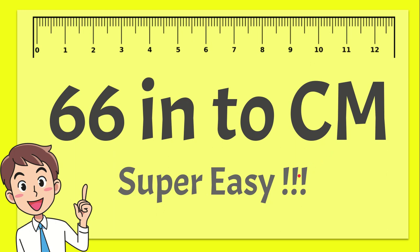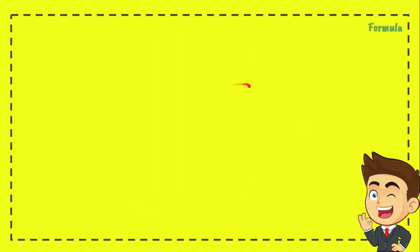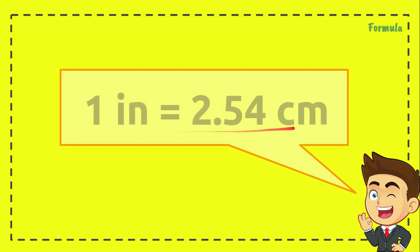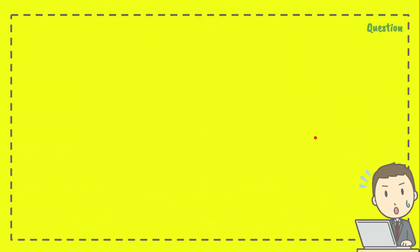Okay, now here is the formula that we need to convert inches to centimeters: 1 inch equals 2.54 centimeters. Of course, 1 inch equals 2.54 centimeters. Now here comes the question: 66 inches equals how many centimeters?